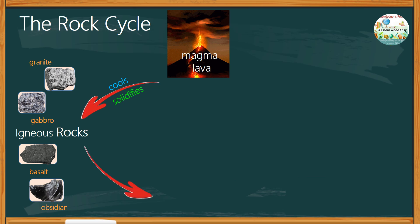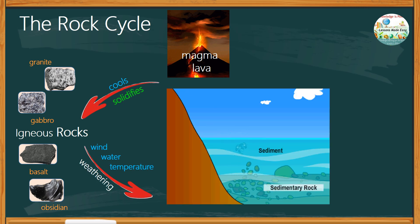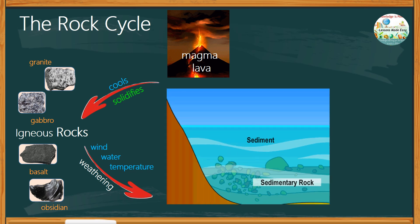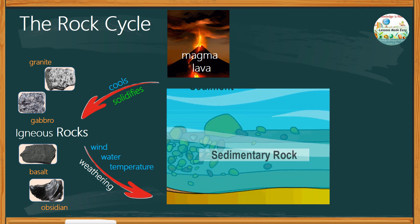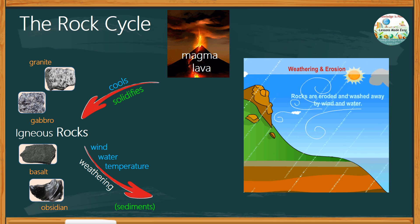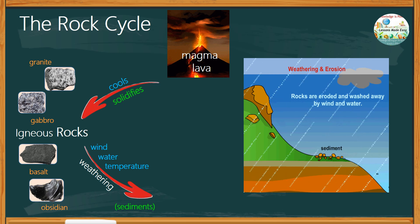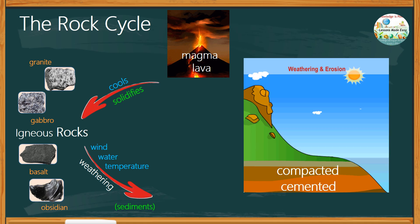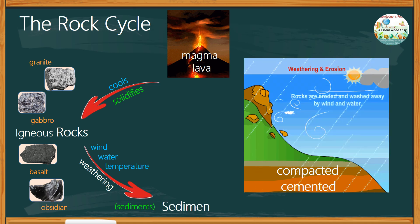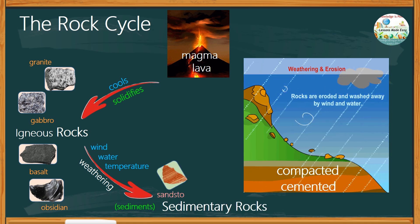Over time, igneous rocks are broken down by wind, water, and changes in temperature. This process is called weathering. Weathering turns igneous rocks into smaller particles called sediments. These sediments are transported by wind, water, or ice, and eventually settle in layers. As layers build up, these sediments are compacted and cemented together, forming sedimentary rocks like sandstone and limestone.